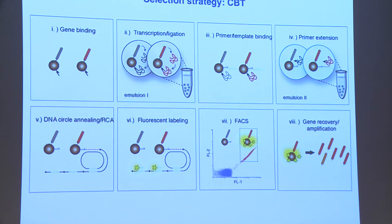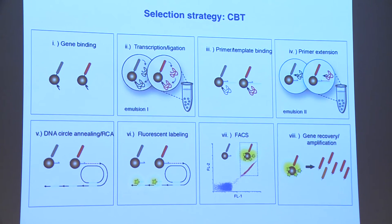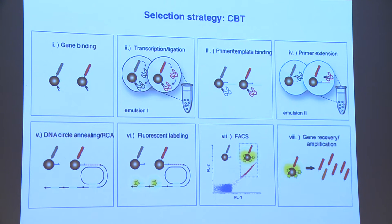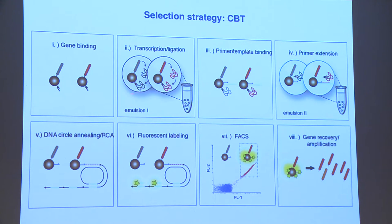Again, we're having nature do all the hard work. There's another selection strategy we call CBT — compartmentalized bead tagging. It starts with one-micron beads containing a single double-stranded DNA gene encoding the ribozyme, as well as about 10,000 copies of an RNA hairpin. We encapsulate these into the aqueous compartments of a water-in-oil emulsion to ensure genotype-phenotype linkage, then carry out a coupled transcription-ligation reaction that decorates the beads with about 10,000 copies of ribozyme.